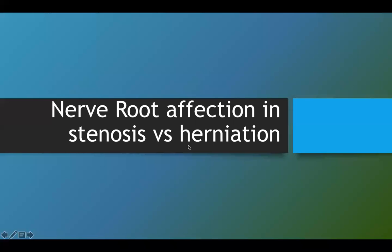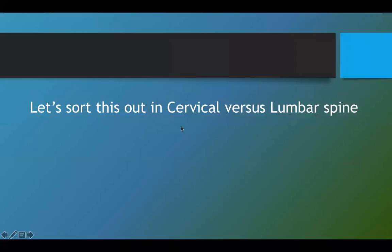Hello everybody, welcome back to the PCE Final Frontier YouTube channel. Today we're going to discuss nerve root affection in stenosis versus herniation. We're going to discuss it at the two main levels, that is the cervical spine and the lumbar spine, as most common affection happens at these two levels.